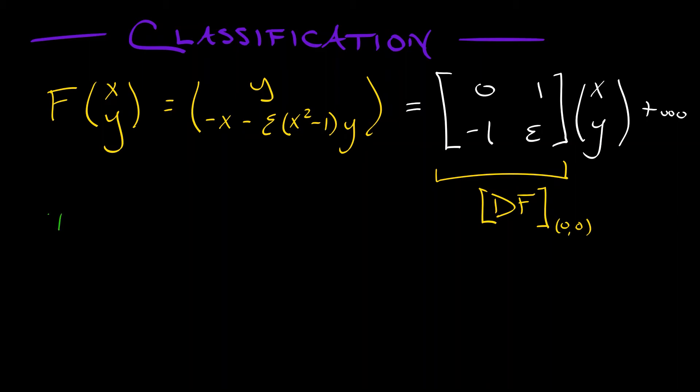This derivative has trace equal to epsilon, which is a positive constant. The determinant is equal to one, which is also positive. And that means we've got a center at the origin. This is going to be just like the nonlinear pendulum we looked at, right?